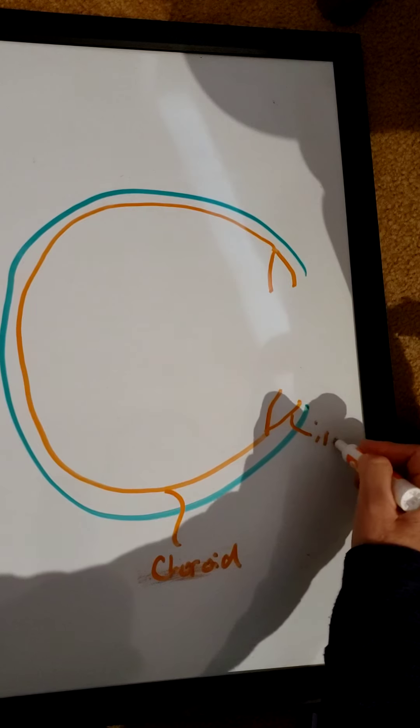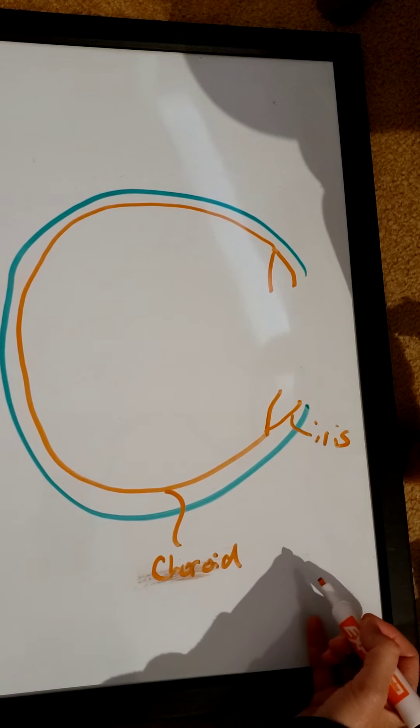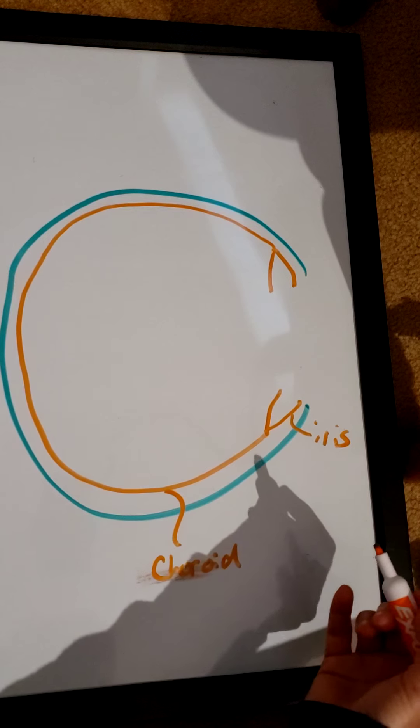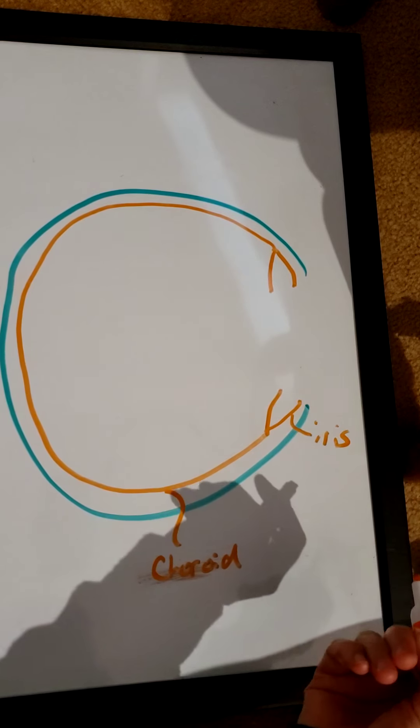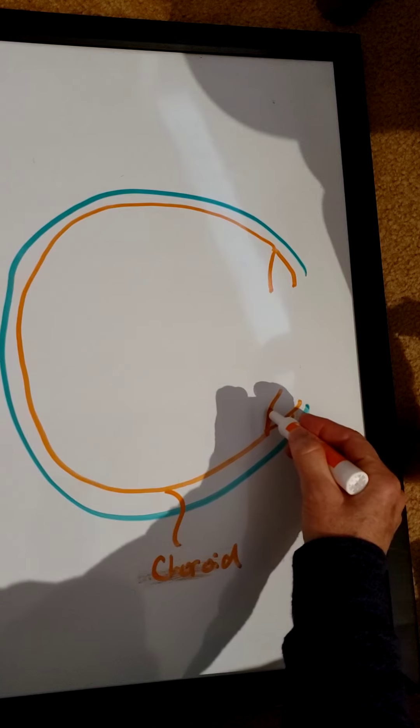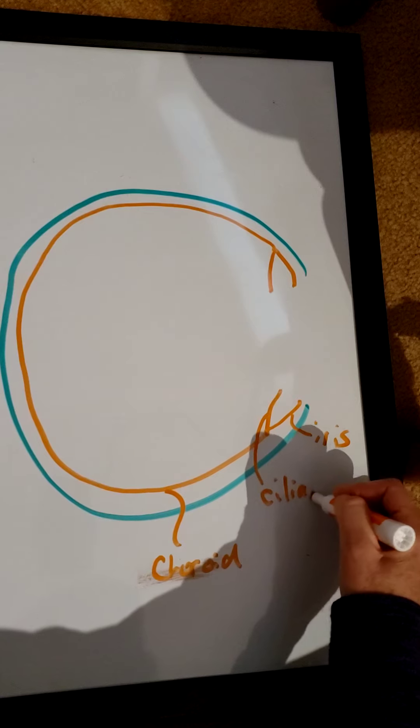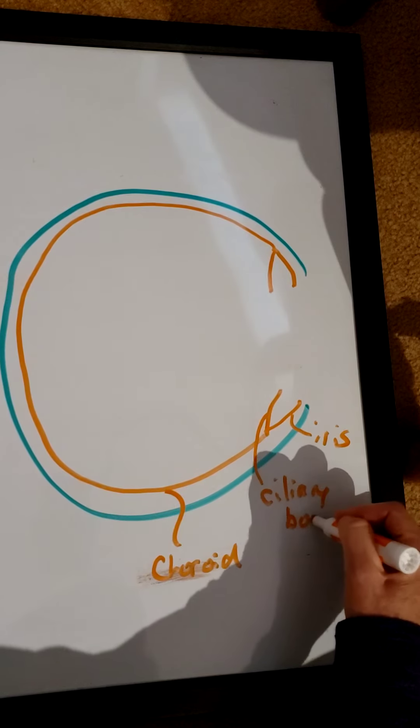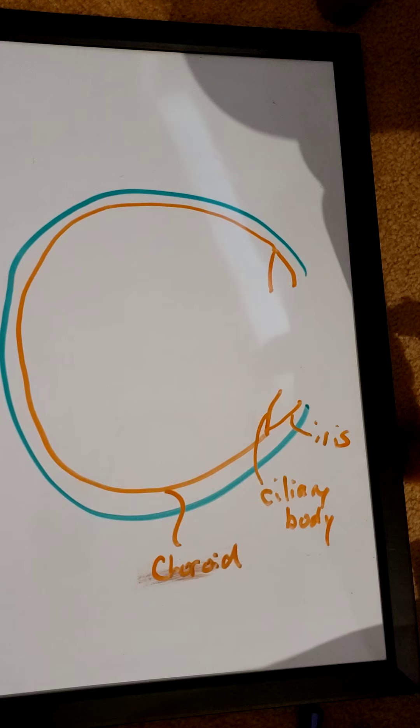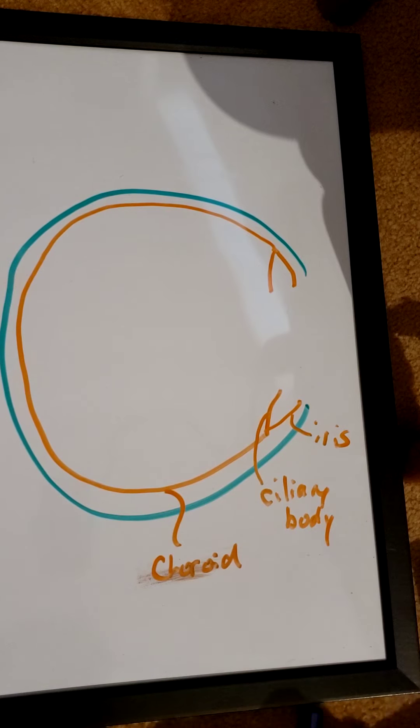This part right here is the iris, that's the colored part of the eye, the part of the eye that makes your blue eyes blue or brown or green or whatever they are. And then back in here is something called the ciliary body. We'll talk in a minute about what that does.